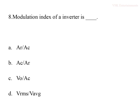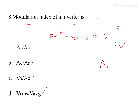The eighth question: the modulation index of an inverter. Options are Ar/Ac, Ac/Ar, V0/Ac, and Vrms/Vaverage. In PWM technique, gating pulses are generated by comparing the reference signal and the carrier signal. The modulation index is the ratio of the magnitude of the reference signal (Ar) to the magnitude of the carrier signal (Ac). So modulation index M = Ar/Ac — option A is the correct answer.